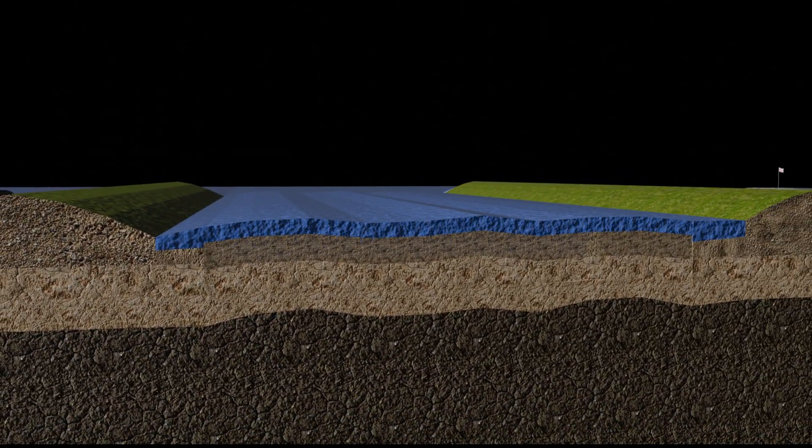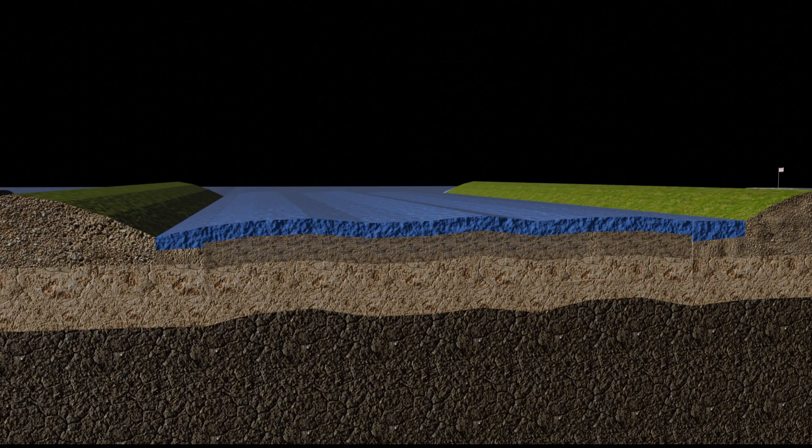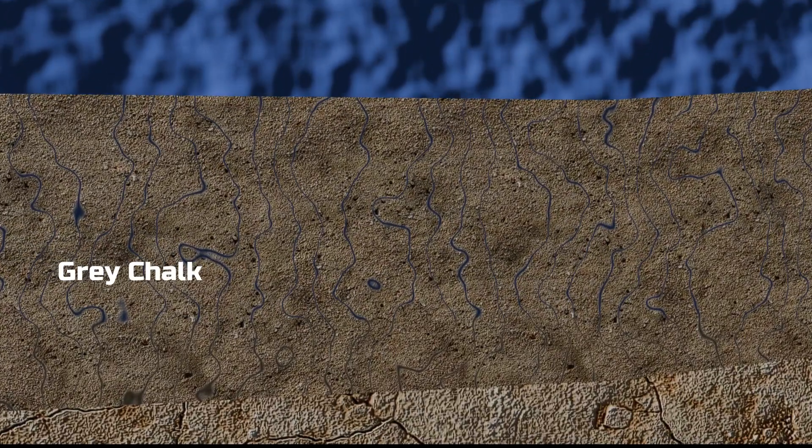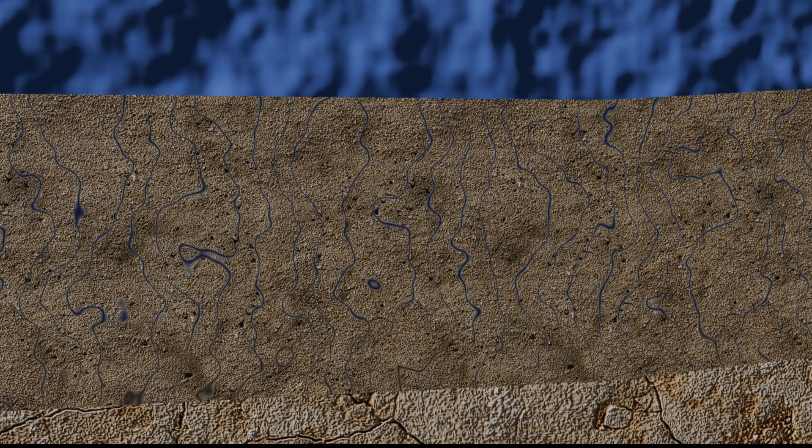The study revealed multiple layers of soil beneath the seabed. The topmost layer was composed of grey chalk, which contained numerous cracks due to water infiltration, making it unsuitable for tunneling.